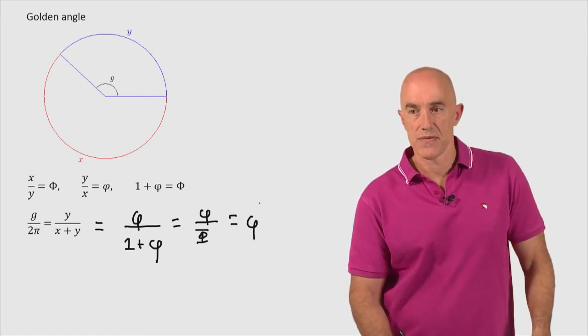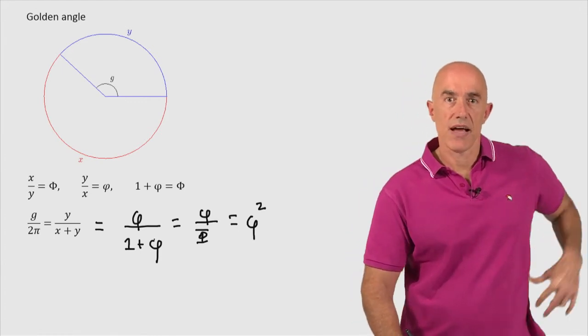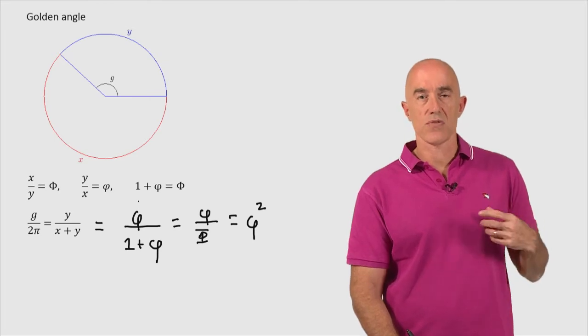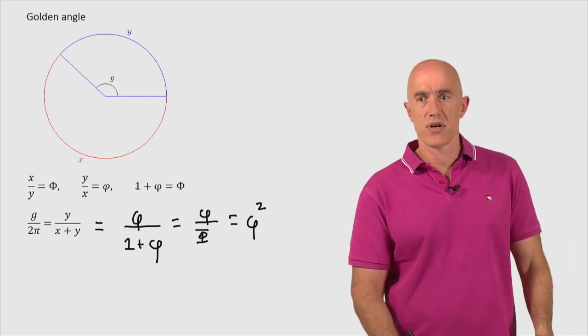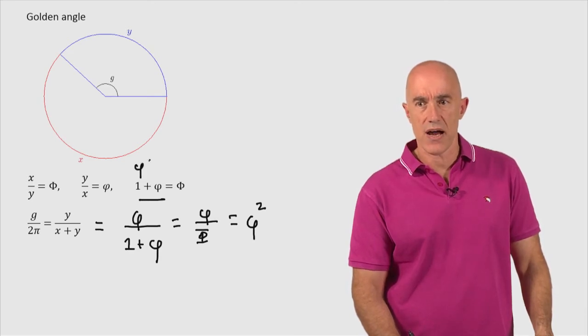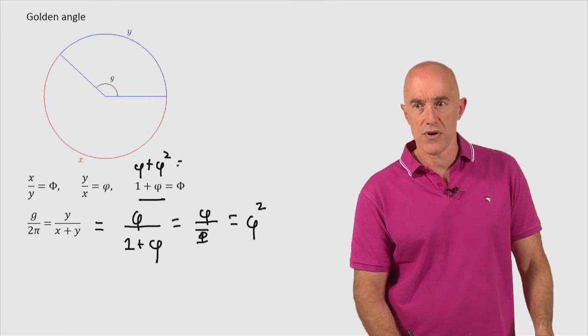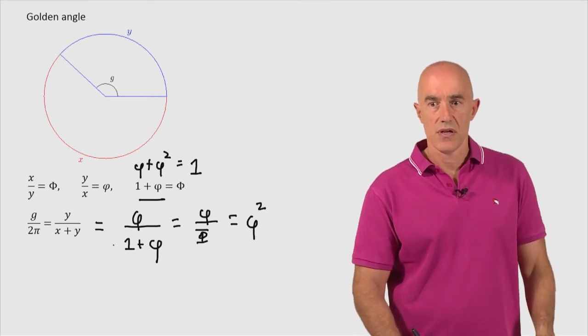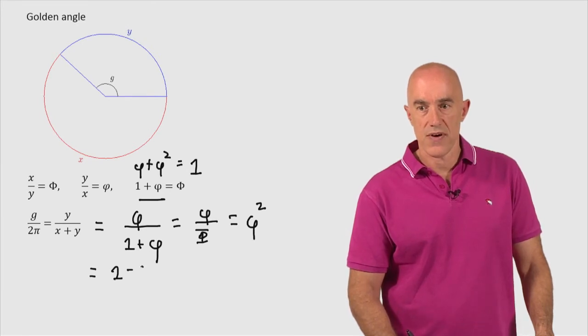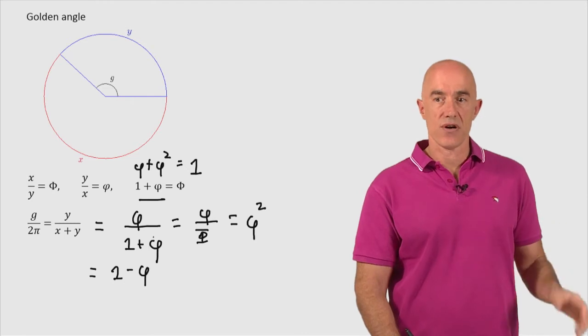So this becomes phi squared. Phi squared is correct, but if we want to make it a linear result, we can take this equation and multiply by phi. So we have phi plus phi squared equals big Phi times little phi, which is 1 because they're the reciprocal of each other. So phi squared, little phi squared is just 1 minus little phi. That puts it in a linear form.